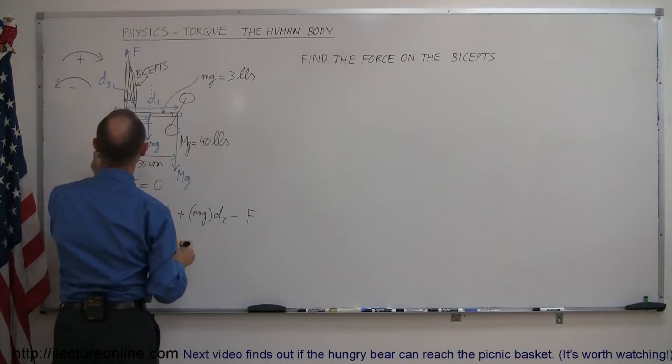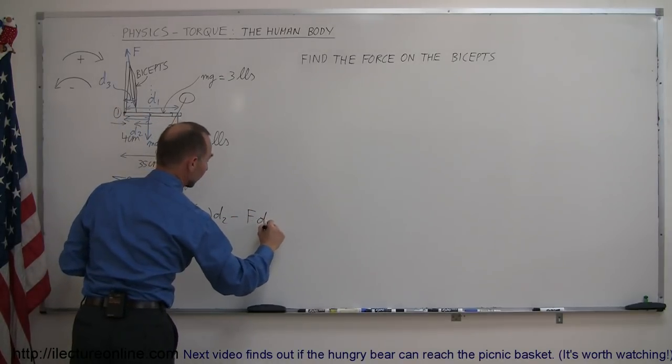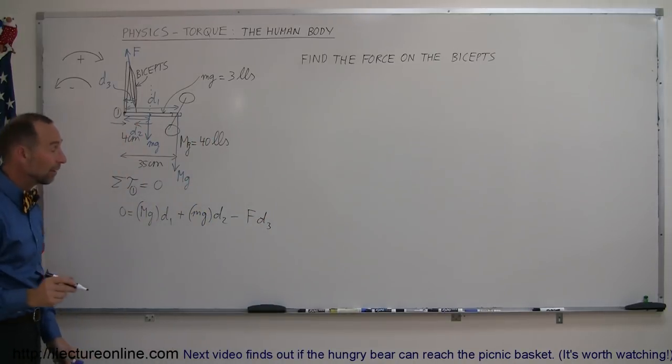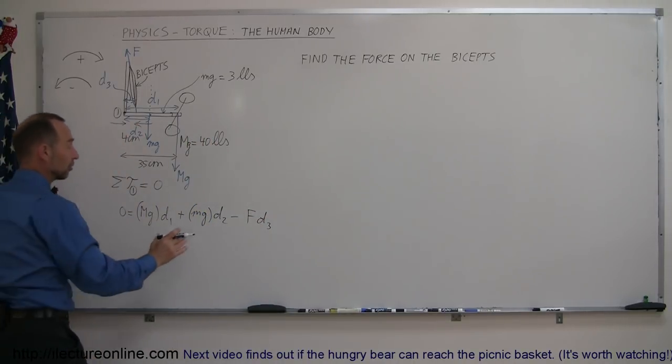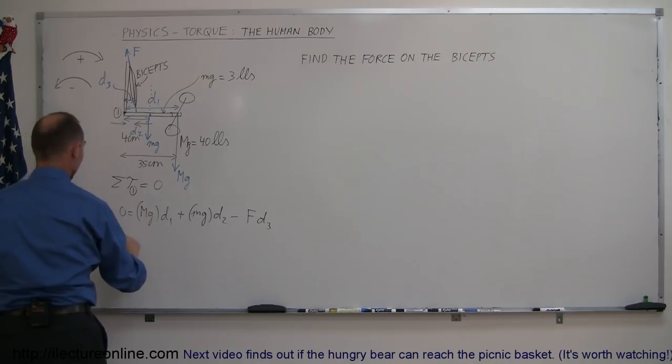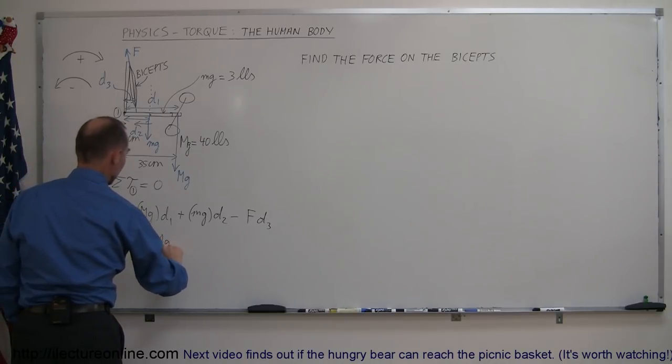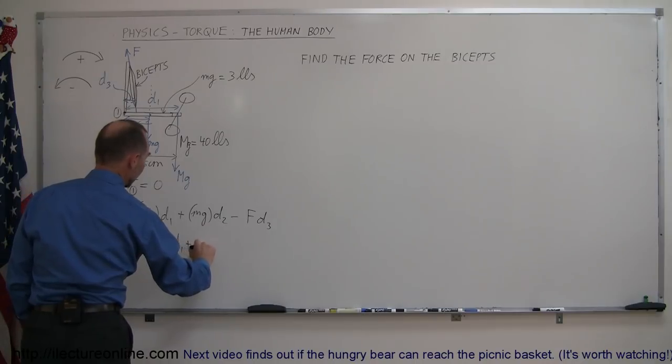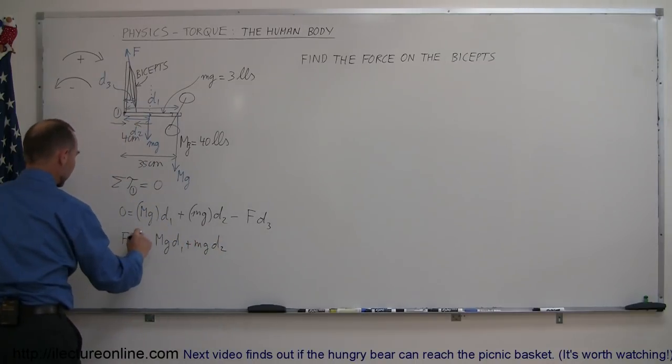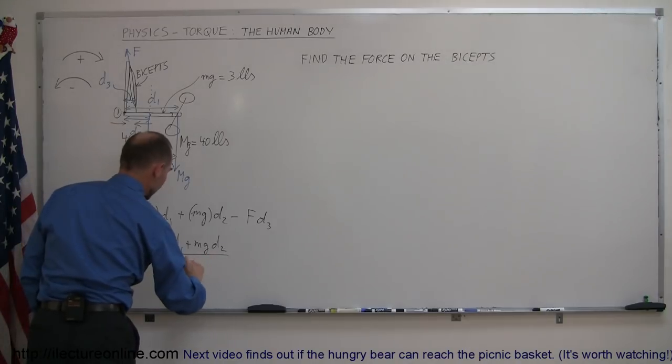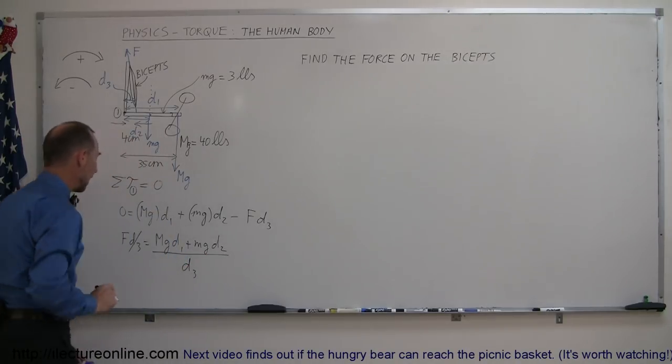Now we have to solve that equation for F so let's move the F D3 over to the other side so we have F D3 equals MG D1 plus little MG D2 and then finally divide both sides of the equation by D3 like so and now we have an equation ready to solve for F.